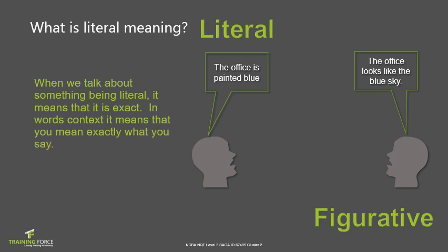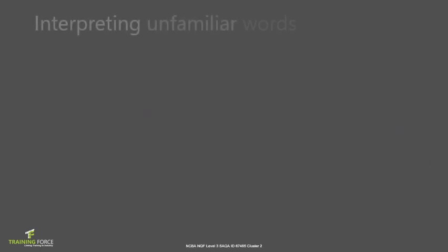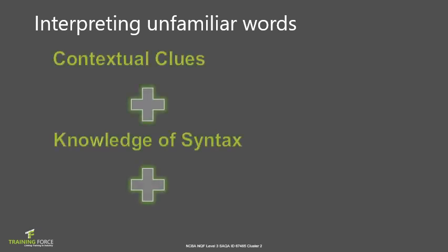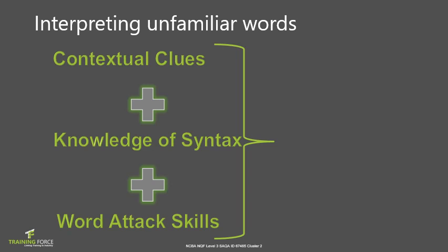Remember that because there is no body language, tone of voice, or volume when reading, the words become more important to get the message across. We all have a vocabulary of words in our brain, but you may come across words you are not aware of. These can easily be interpreted by using contextual clues, knowledge of syntax, and word attack skills — all of which equal interpretation. When reading, it is important to differentiate between literal and figurative meanings of words. There are a number of reading and viewing strategies to help us do this.